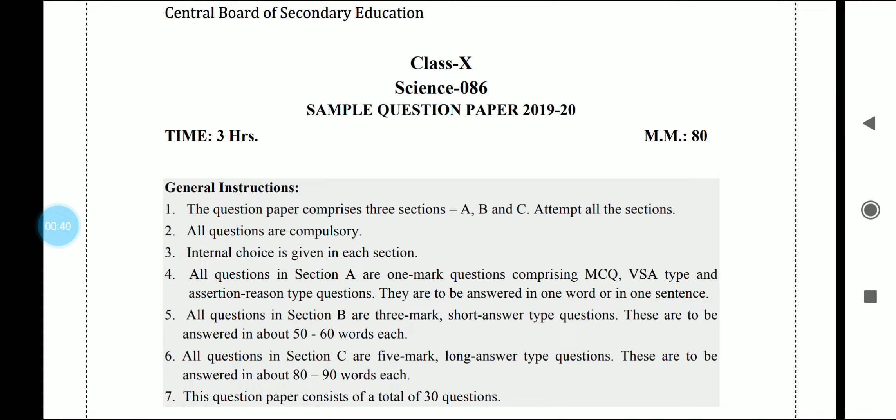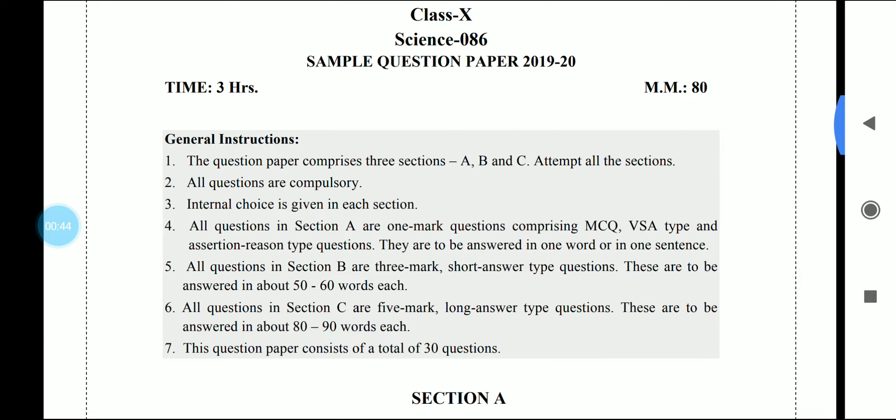Time is 3 hours and maximum marks are 80. In general instructions, there are 3 sections ABC and all questions are compulsory. There are internal choices given in each section. In section A, there will be 1 mark questions including MCQ type, VSA type, and assertion reasoning. You have to answer in only one word or one sentence.